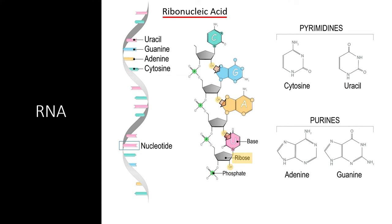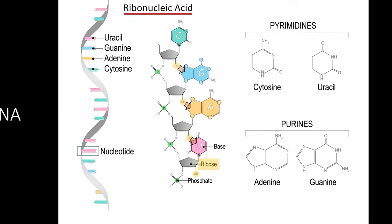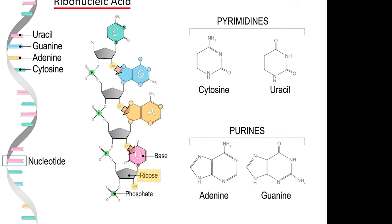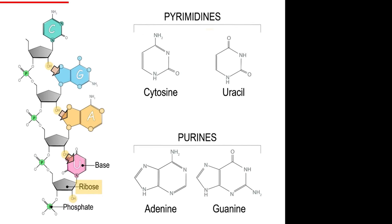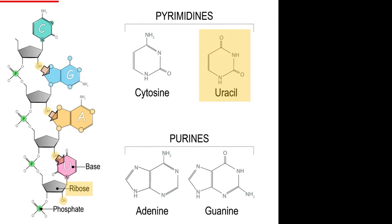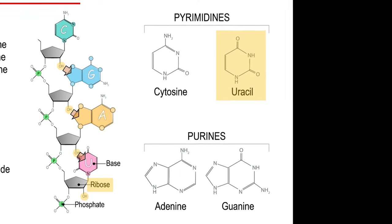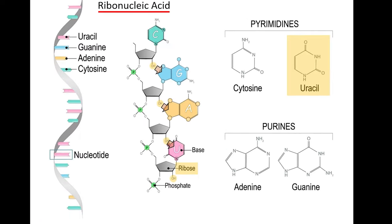The other difference that makes RNA different from DNA is that it uses uracil instead of thymine. While all of the other nitrogenous bases are the same, RNA may use uracil for a few different reasons. Uracil is easier to create and can help the cell distinguish between DNA and RNA.